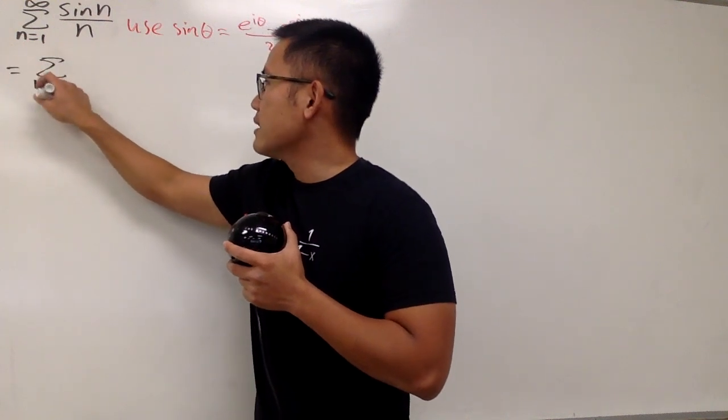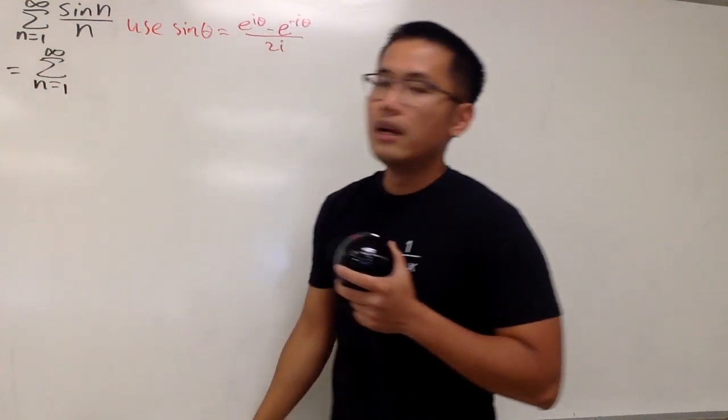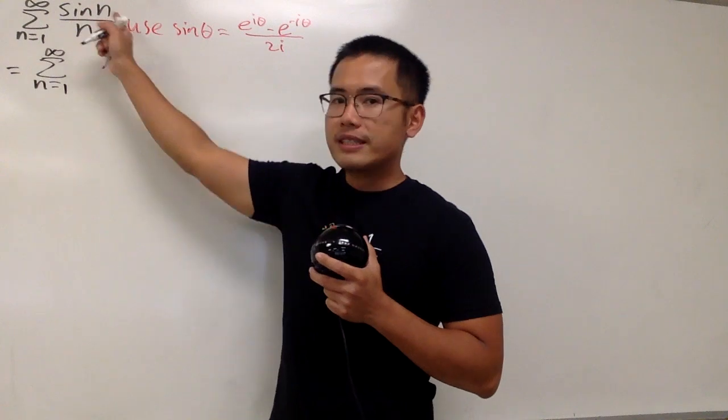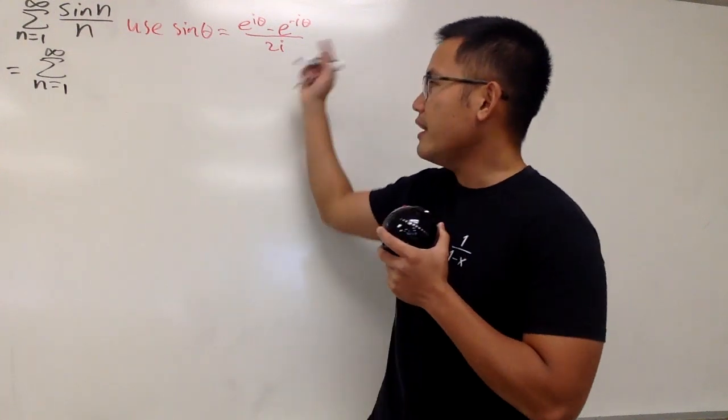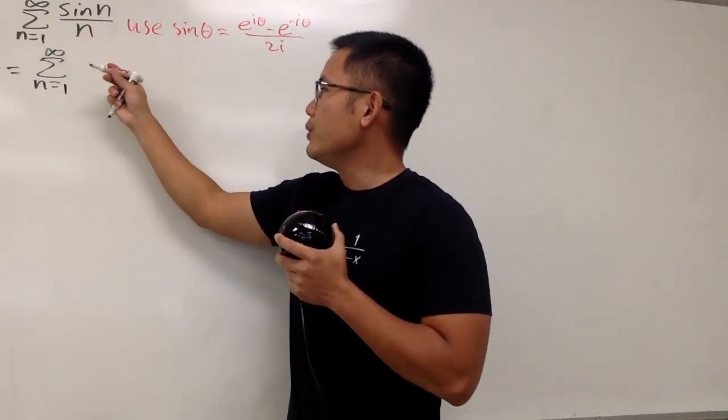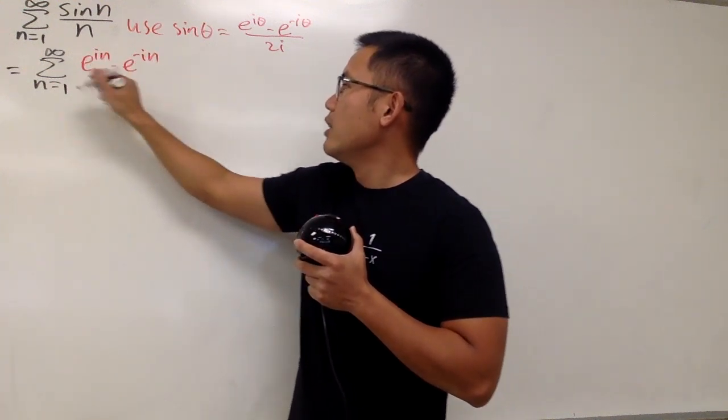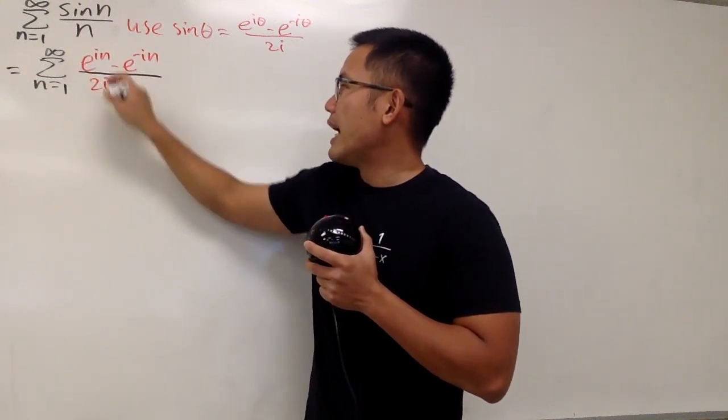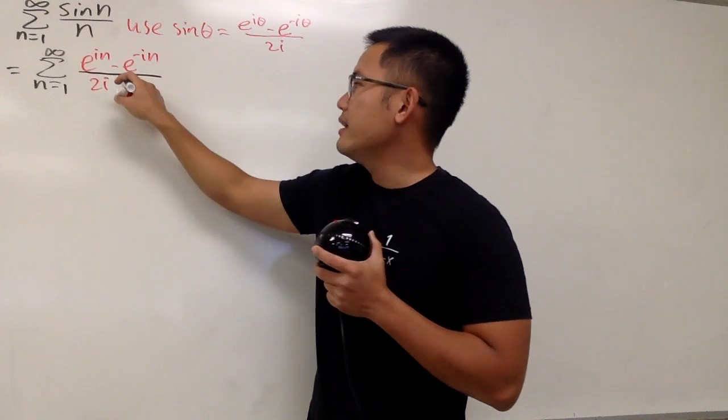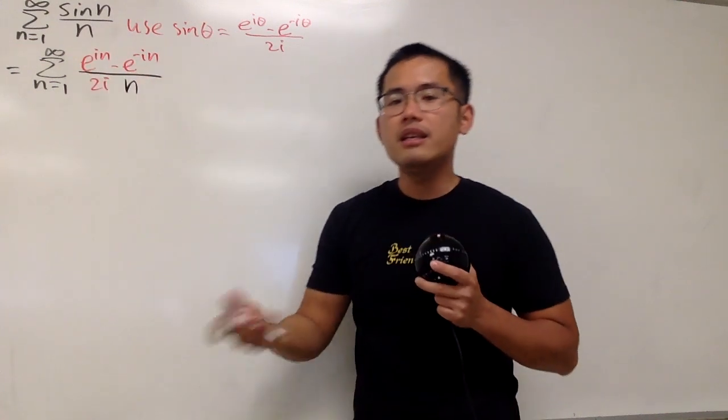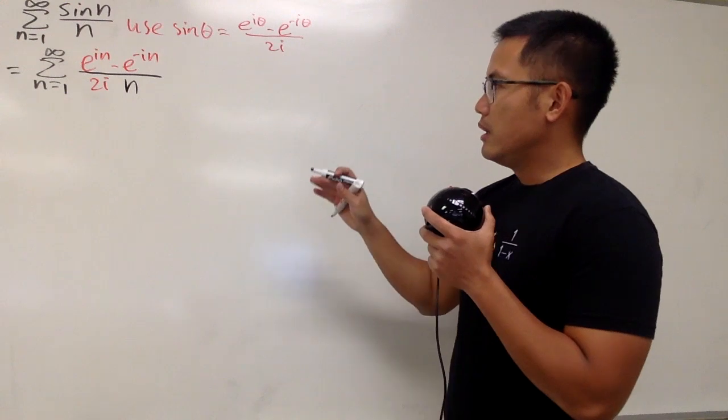Here we go. This is going to be the sum as n goes from 1 to infinity. And, of course, for sine n, we can just put the n into the theta. So we will get e to the i n minus e to the negative i n over 2i. And, of course, we still have that n. And the red part is the sine n in the complex world.